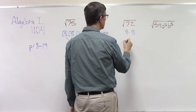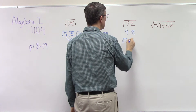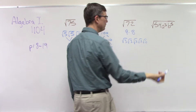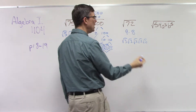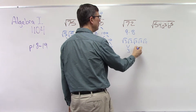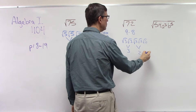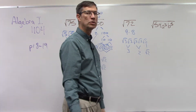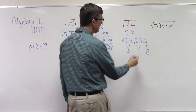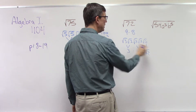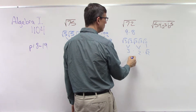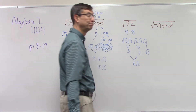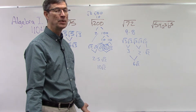Let's take 72. You know that 72 is 9 times 8. So 9 is square root of 3 times square root of 3, and 8 is square root of 2 times square root of 2 times square root of 2. The 3 pops out giving 3, the 2 pops out giving 2, and I'm left with one square root of 2. These are all being multiplied, so 3 times 2 is 6 — the answer is 6 square root of 2.